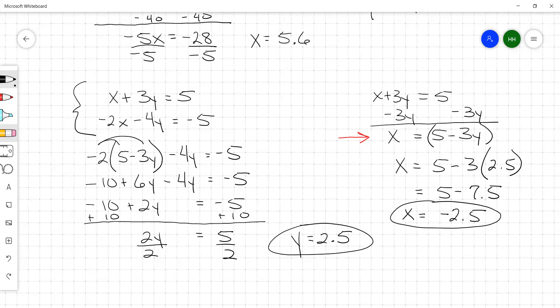And then we write that solution as an ordered pair. Negative 2.5 and 2.5. So that's the point where the two lines intersect each other.